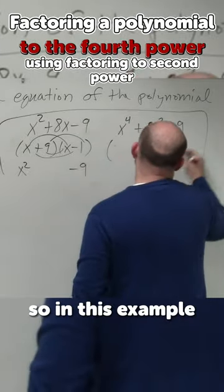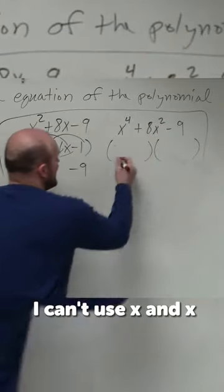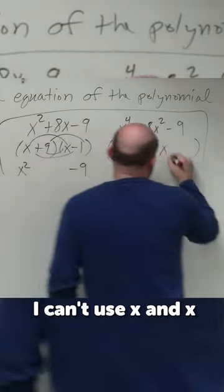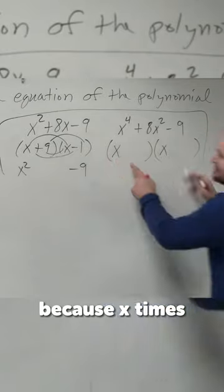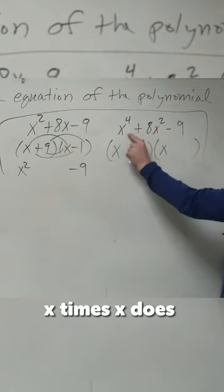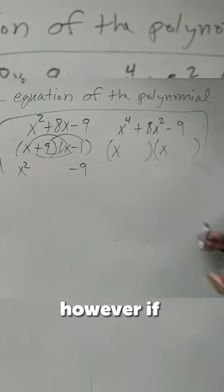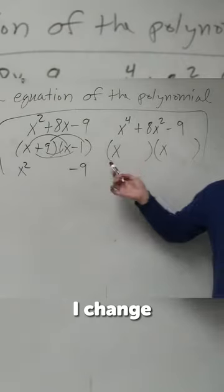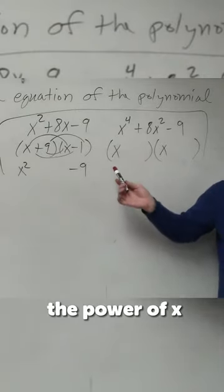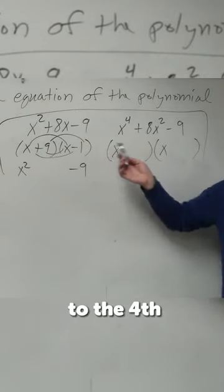So in this example, I can't use x and x, because x times x gives us x squared. x times x does not give us x to the fourth. However, if I change the power of x, I can get x to the fourth.